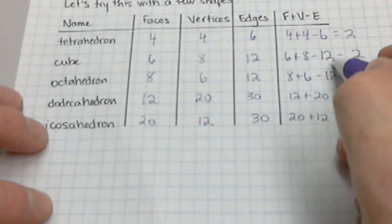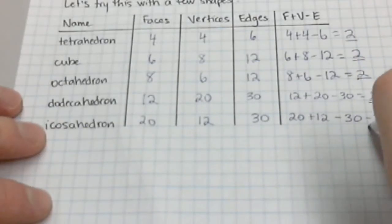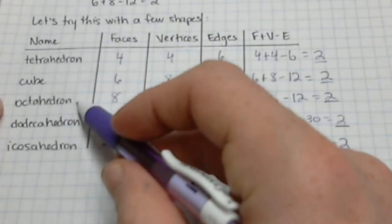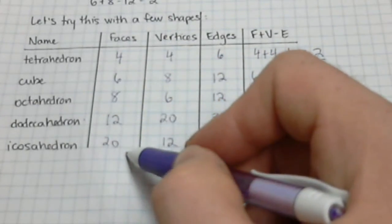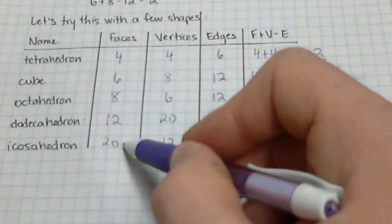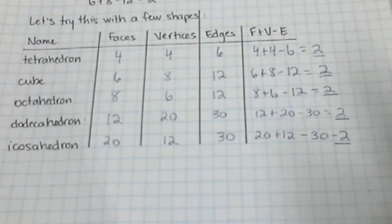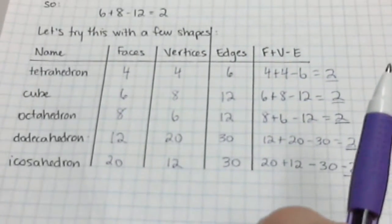All of these equal 2. You'll notice that octahedrons, which are made up of eight faces, dodecahedrons which have 12 faces, and then icosahedrons which have 20 faces and are made up of all triangles—that formula works for all of them.